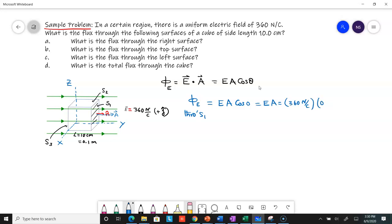That's 0.1 meter squared, giving you 3.6 newton·meter squared per Coulomb. That's a positive flux—field lines leaving the surface.